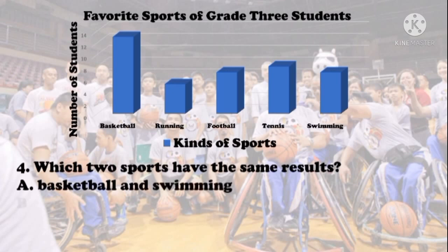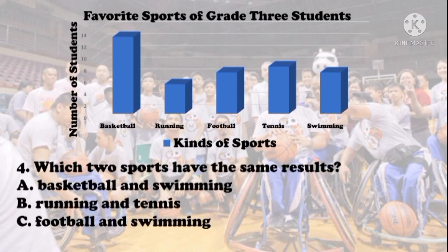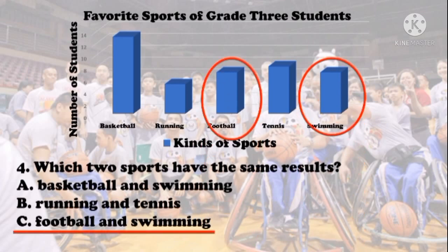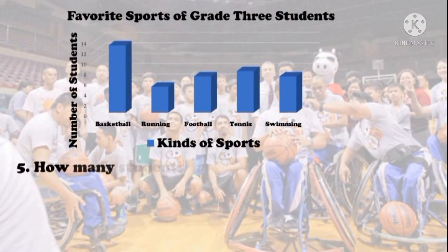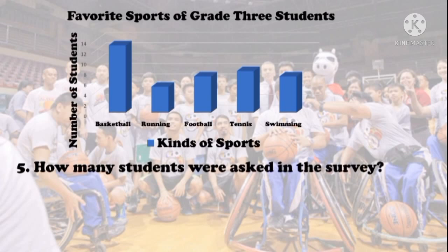Fourth question: which two sports have the same results? Choices: A. Basketball and swimming, B. Running and tennis, C. Football and swimming. The correct answer is letter C — football and swimming.